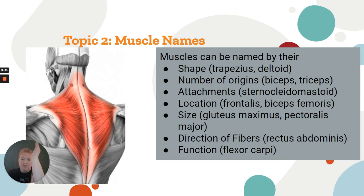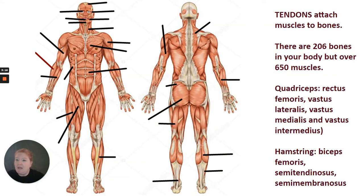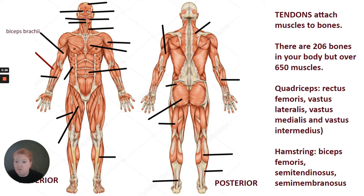And then by function. Remember, we always consider the body in anatomical position. We have the flexor carpi, which allows flexion of the wrist, and the extensor carpi, which allows extension of the wrist. You need to know all the muscles in the diagram. The quadriceps is a group of four and the hamstrings a group of three — you don't need to know the individual names, but you do need to know all the ones in the diagram.